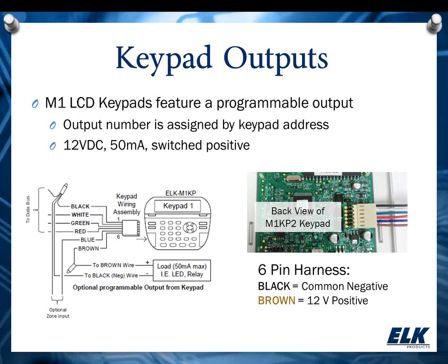Now let's talk about your keypads. There's an output available from our LCD keypads — that includes the M1KP, KPB, M1KP-2, M1KP-3, and the M1KP-Nav. The only keypad that really doesn't offer that is the very small LED arming station. You have that output available from your keypads, which can be handy if you have something you're wanting to control that's close to the keypad. The output number associated with the keypad is assigned by its address — if your keypad address is 1, that's going to be output 193. If it's address 2, then it's output 194, and so on. We have a table in the documentation for the keypads that outlines this.